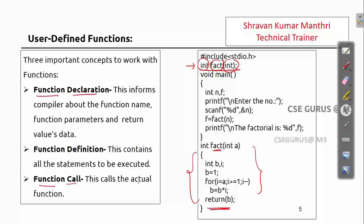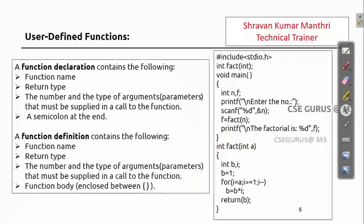Third is the function call. The function call invokes the actual function — for example, fact(n) is the call. When you call it, execution redirects to the function definition. If you don't call the function, that code will never be executed — remember this point. The function only executes when it is called.